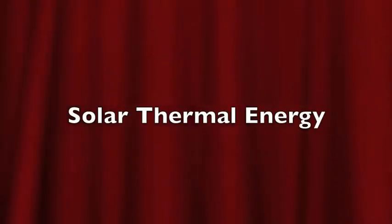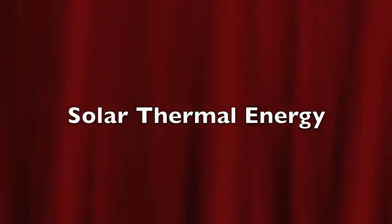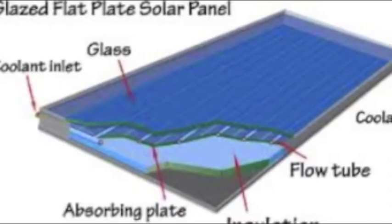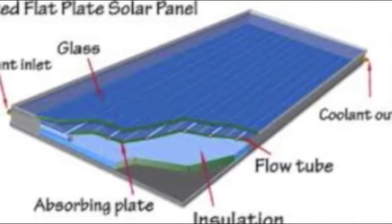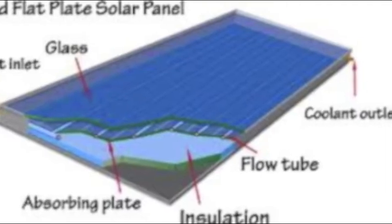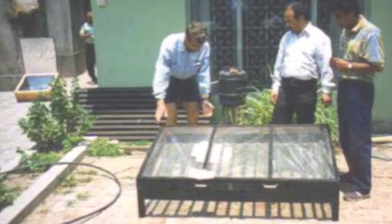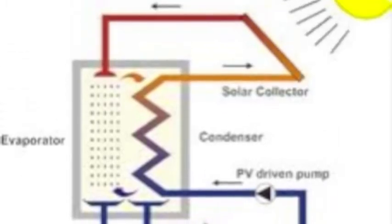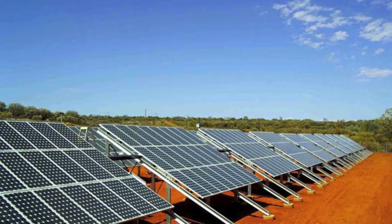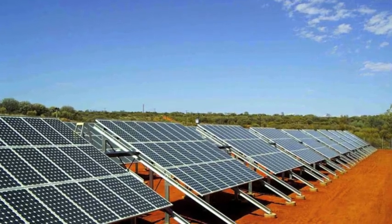Solar thermal energy is a technology used to convert solar energy into thermal energy, or heat. The United States Energy Information Administration classifies three types of energy collectors: low energy collectors, which look like flat plates and are generally used to heat swimming pools; medium energy collectors, which also look like flat plates and are used for solar drying, cooking, and distillation; and high energy collectors, which use lenses and mirrors to concentrate sunlight into electric power production.